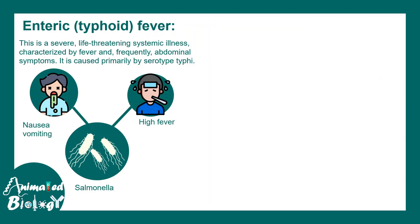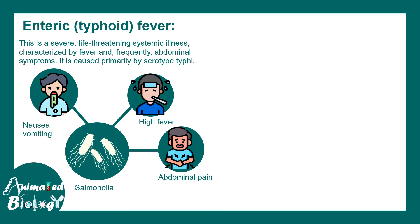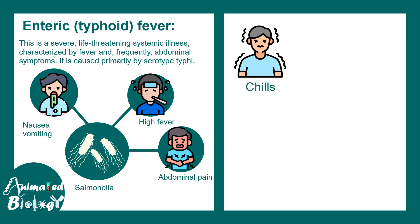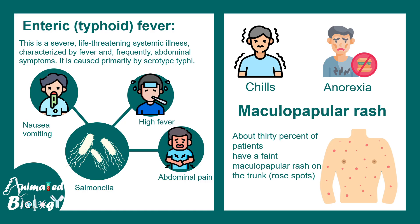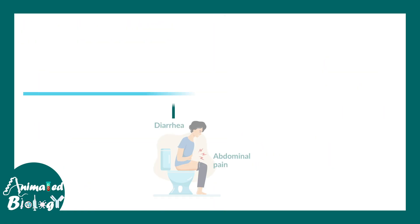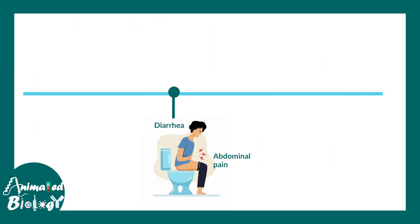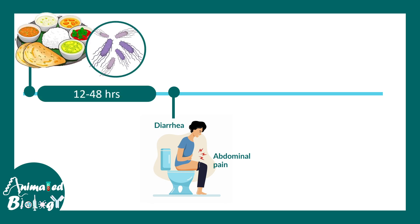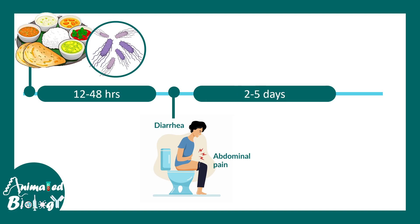The symptoms of Salmonella include nausea, vomiting, and abdominal pain. Other symptoms might include chills, anorexia, and maculopapular rash, but these are not present in all patients. Symptoms of Salmonella infection occur 12 to 48 hours after exposure to the pathogen, and typically last for 2 to 5 days before resolution.